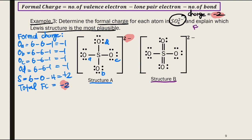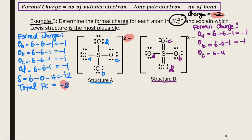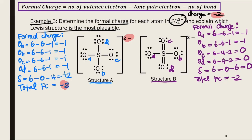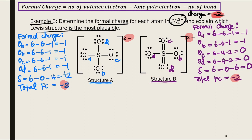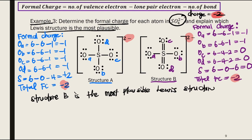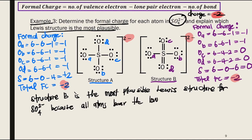For Structure B, we also label the four oxygen atoms A, B, C, and D and calculate the formal charge for each atom. The total formal charge is also negative 2, matching the polyatomic ion charge. Comparing Structure A and Structure B, Structure B is the most plausible Lewis structure for SO₄²⁻ because all atoms bear the lowest formal charge — many atoms in Structure B have a formal charge of 0.